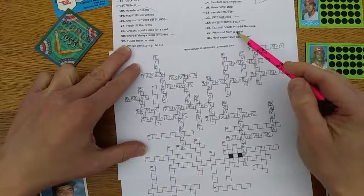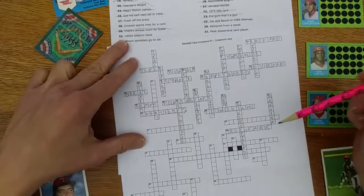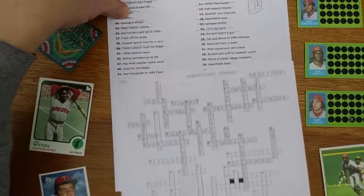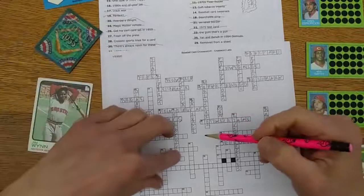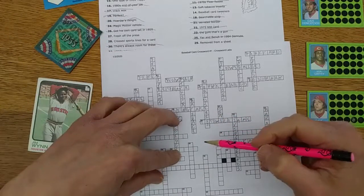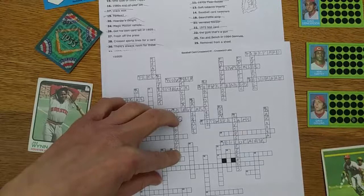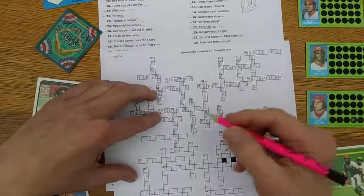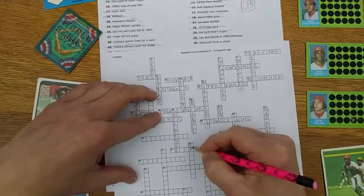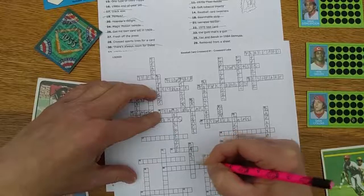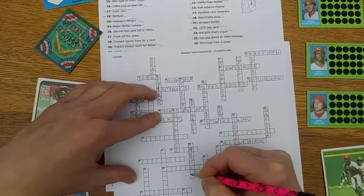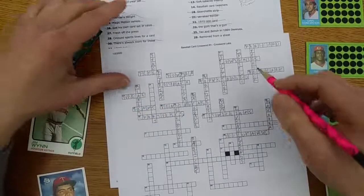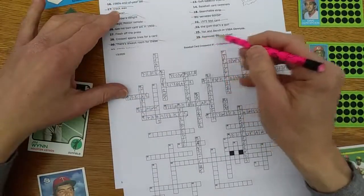29 down: Remove from a sheet. So let's see, remove from a sheet, 29 down. Hand cut maybe? I think that's right. I kind of remember this clue, so I'm cheating a little bit because I put the hyphen in there. That would be hard. However, I have an advantage because I created it.